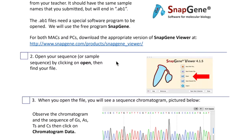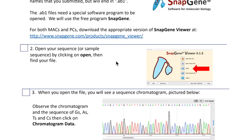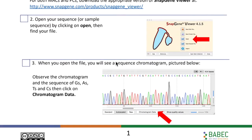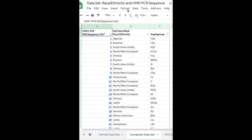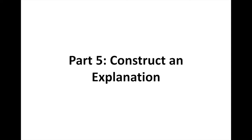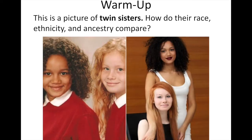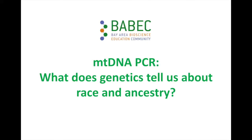Students will use online tools to analyze raw DNA sequences to identify an individual's haplogroup. Lastly, they'll return to the question posed at the beginning of the project, and based on their learning throughout, provide evidence for their answer to the question: Does your DNA tell you your race, ancestry, or both?